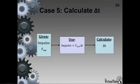In case 5, we are asked to calculate delta t when we are given the impulse and the net force acting on the object.